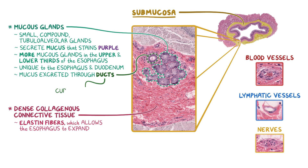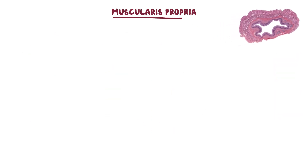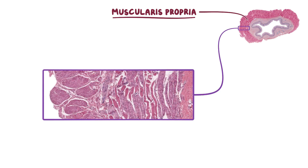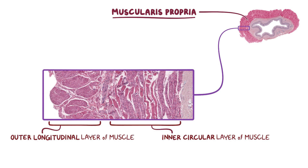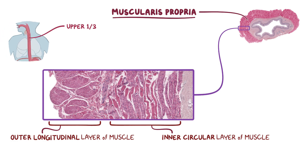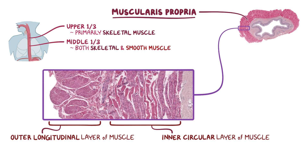These ducts typically have cuboidal or stratified cuboidal cells. The next main layer is the muscularis propria, which varies depending on the portion of the esophagus we're looking at. But throughout the entire esophagus, there'll be an inner circular layer of muscle and an outer longitudinal layer of muscle. The proximal portion of the esophagus is under voluntary control, so the upper third will have primarily skeletal muscle. The muscle type will gradually transition from skeletal to smooth muscle, so the middle third will have both skeletal and smooth muscle present, and the lower third will consist entirely of smooth muscle.